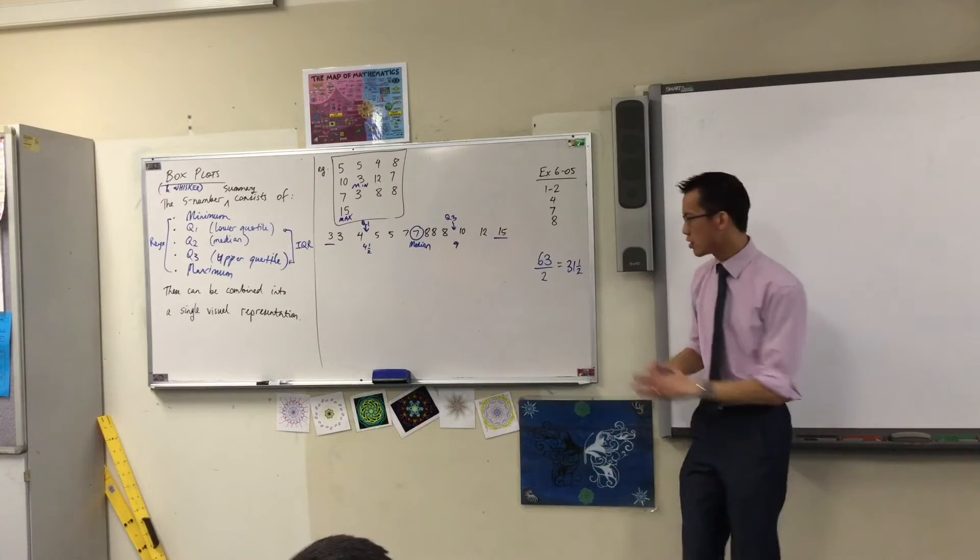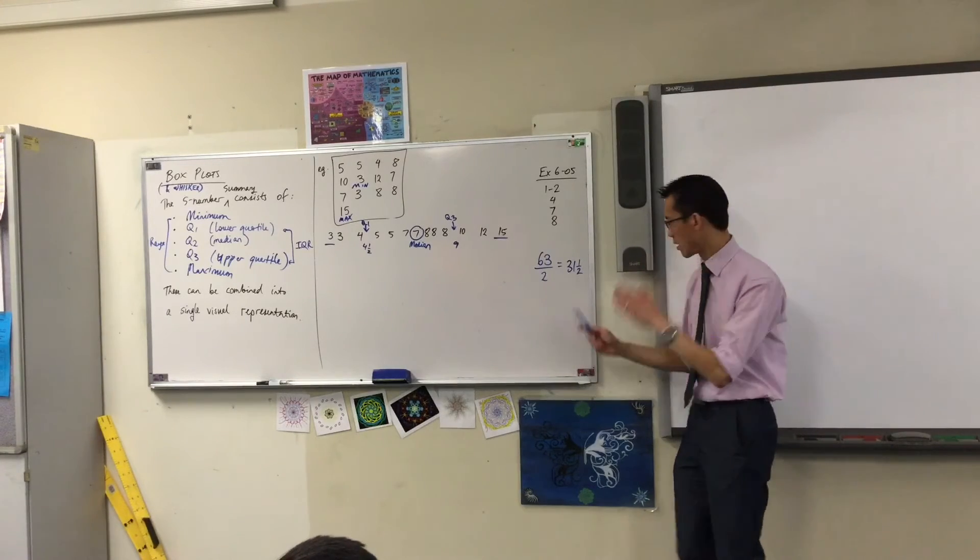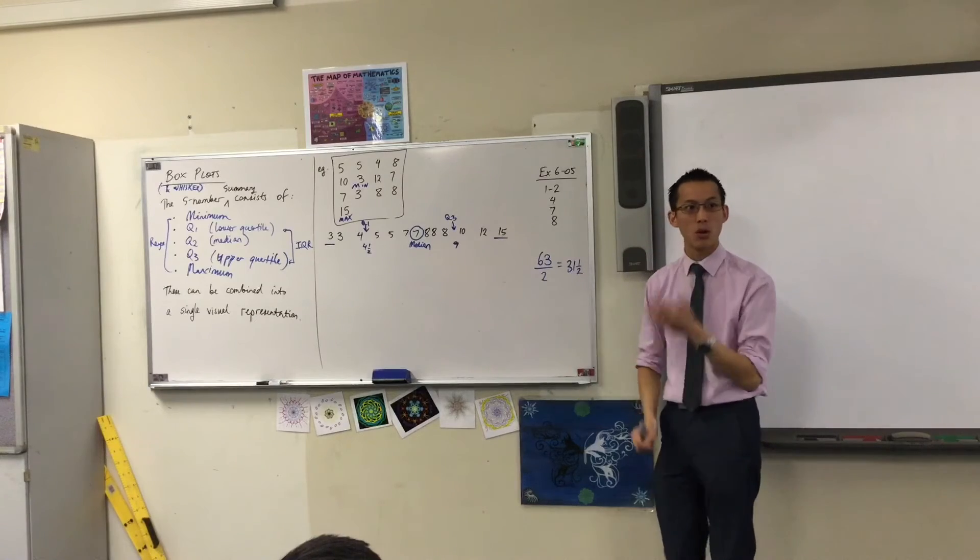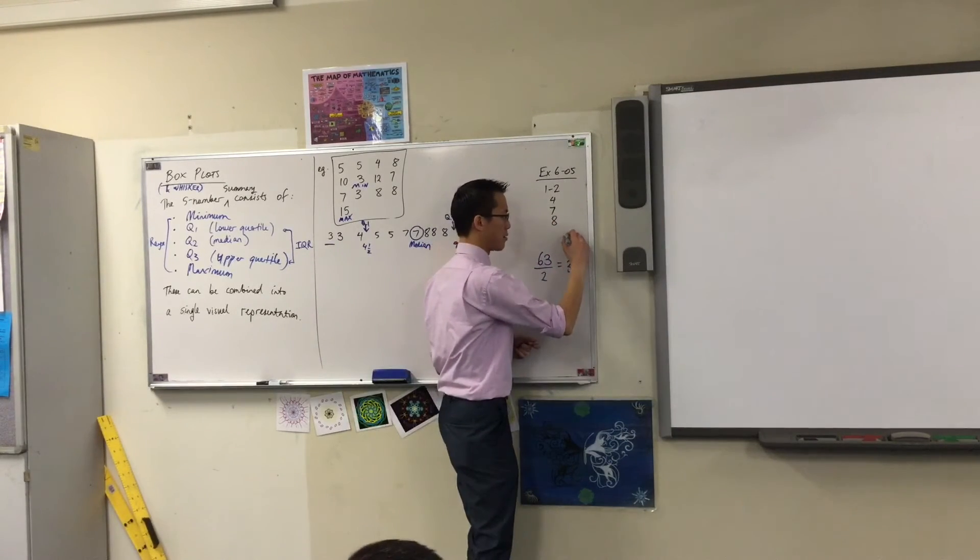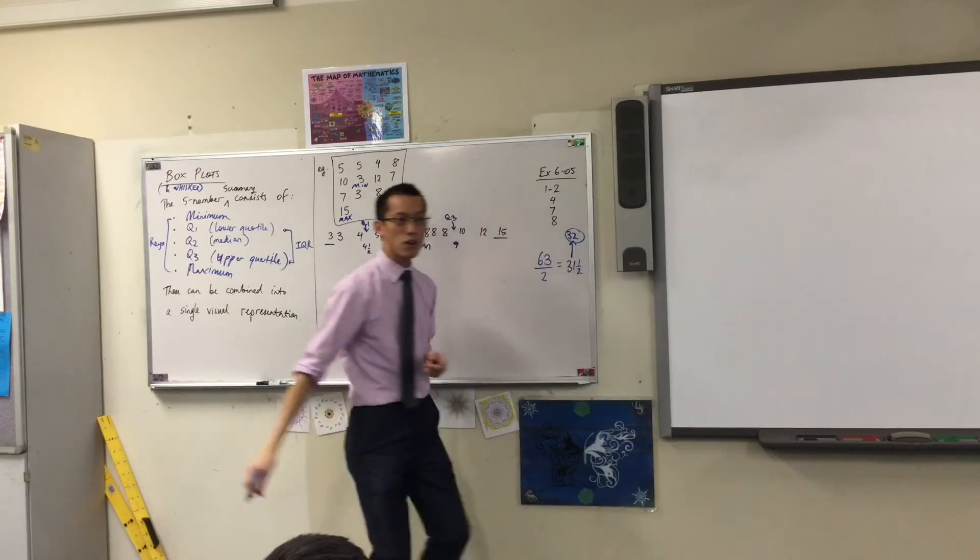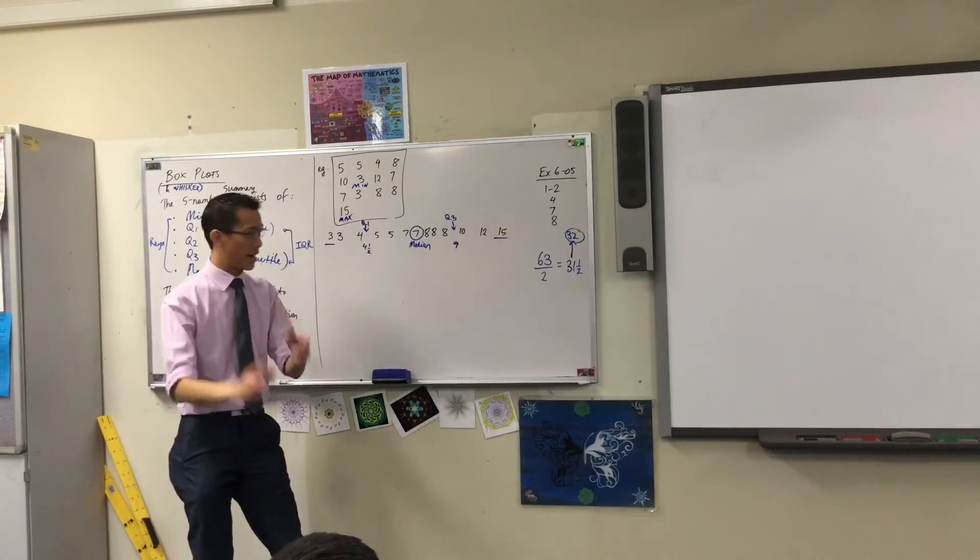But we know, this is an odd number of scores, so I actually want not between two scores, I want a particular score. Which one is it? 32. So you always round up.